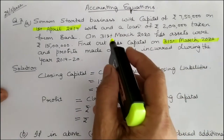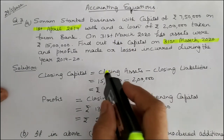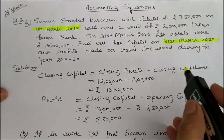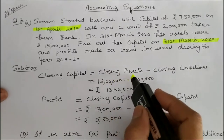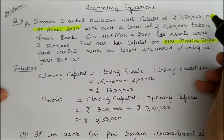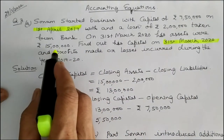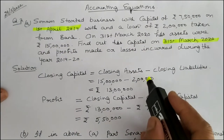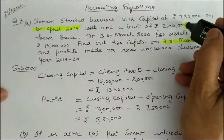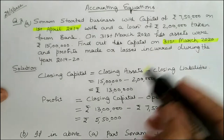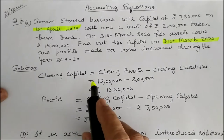If you want to find out closing capital, then closing capital is equal to closing assets minus closing liabilities. Here, closing assets are given as 15,00,000 and the liability is 2,00,000, which is the loan. So, 15,00,000 minus 2,00,000 is equal to 13,00,000, which is the amount of closing capital.